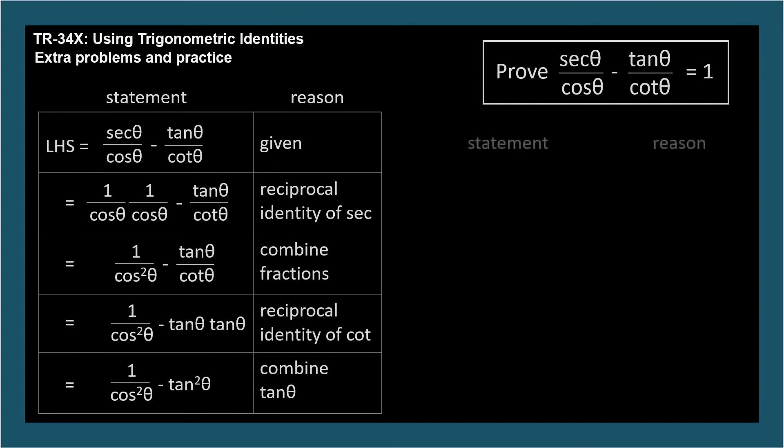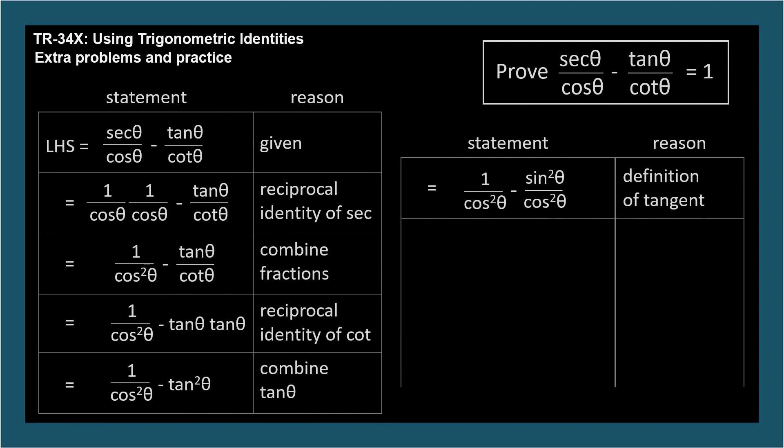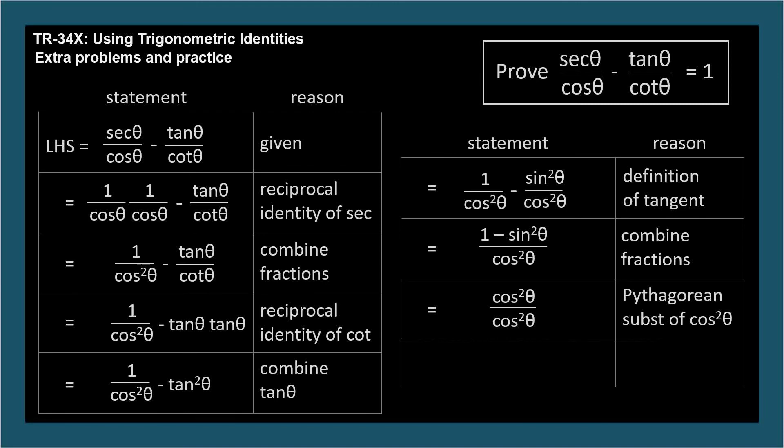Let's rewrite tangent squared theta as sine squared theta over cosine squared theta by the definition of tangent. Now both fractions have the same denominator, so we can combine them. And 1 minus sine squared theta equals cosine squared theta by Pythagorean substitution. And so cosine squared theta over cosine squared theta equals 1, which is the right-hand side, so we've proven the identity as required.